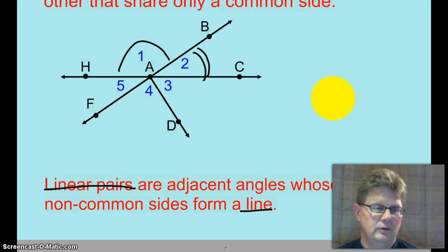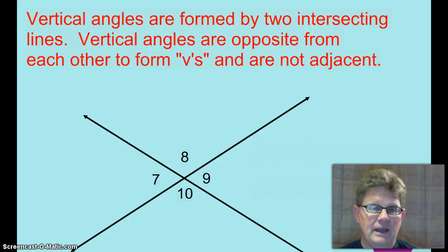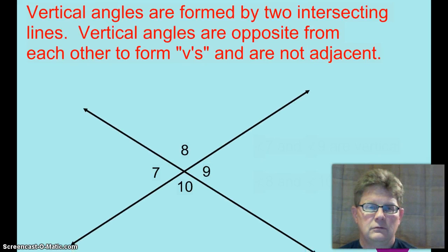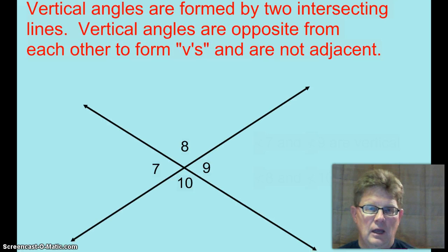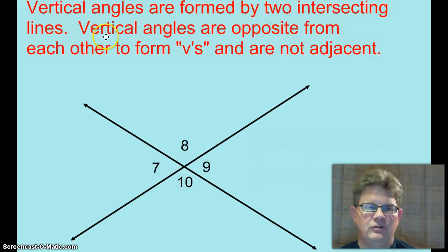Just having a little fun. Whatever. Move along. So, vertical angles are angles formed by two intersecting lines, swoosh and swoosh. And vertical angles are opposite from each other to form V's. They're not adjacent to each other.